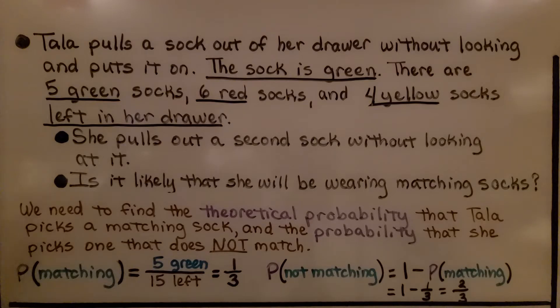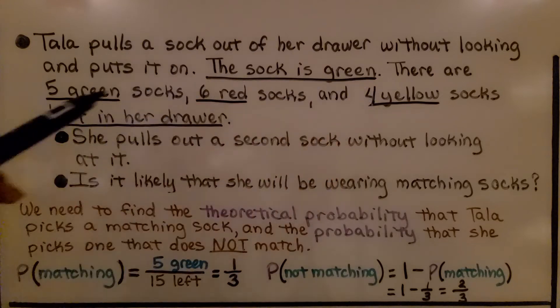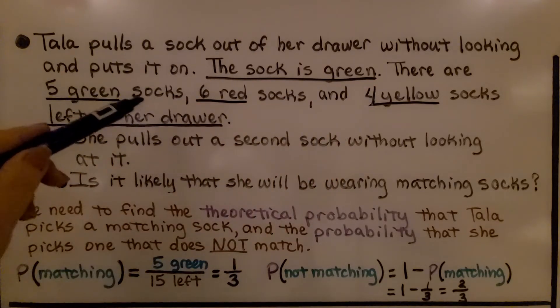We need to find the theoretical probability that Tala picks a matching sock and the probability that she picks one that does not match. The probability of matching is equal to five green socks over 15 socks left in the drawer. There are five plus six is 11 plus four is 15. So there's 15 socks left in the drawer.